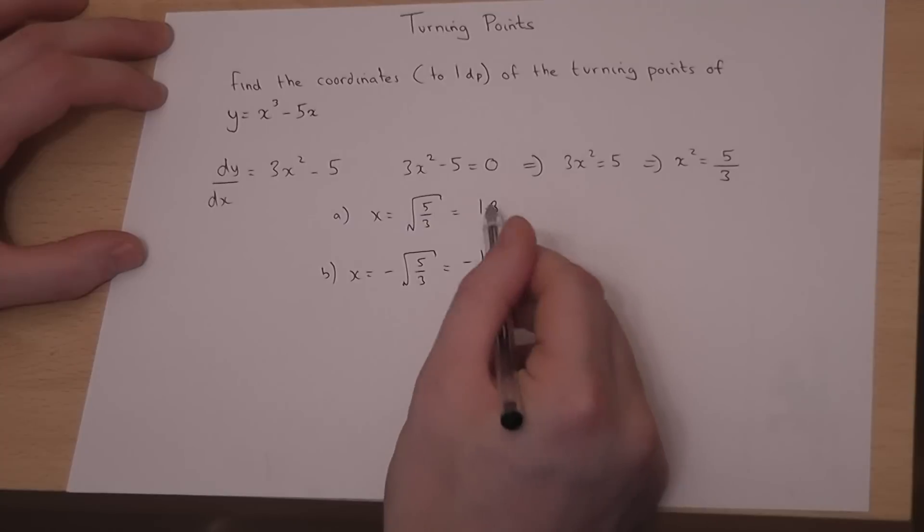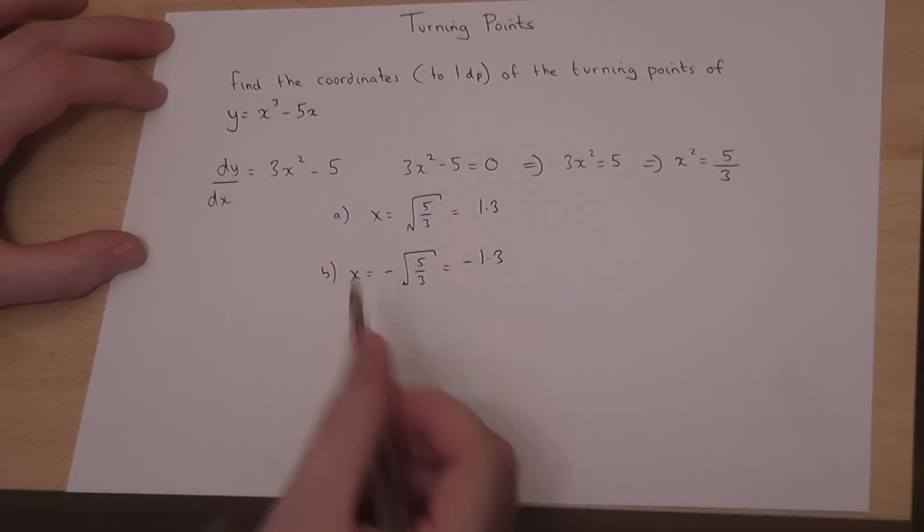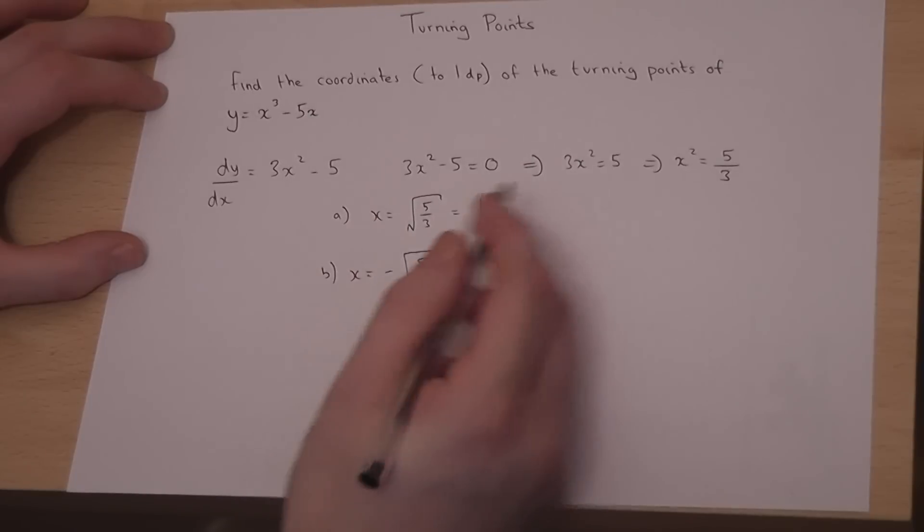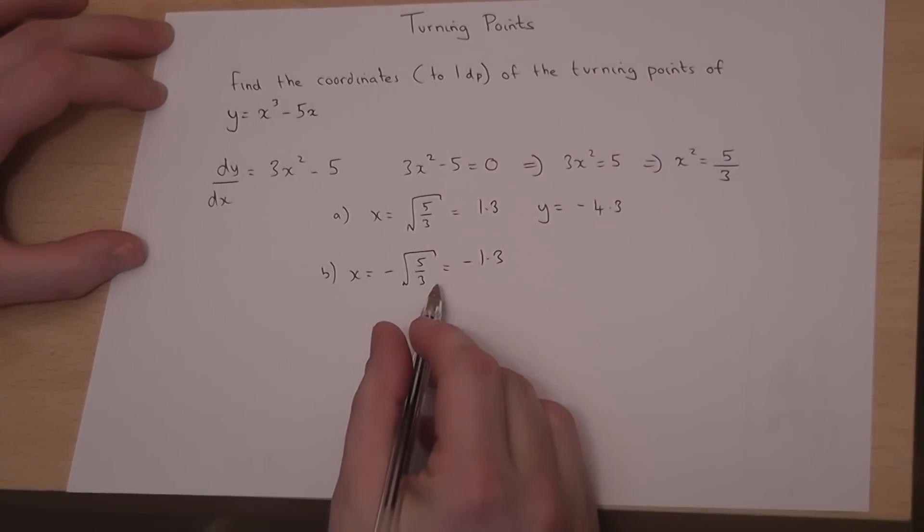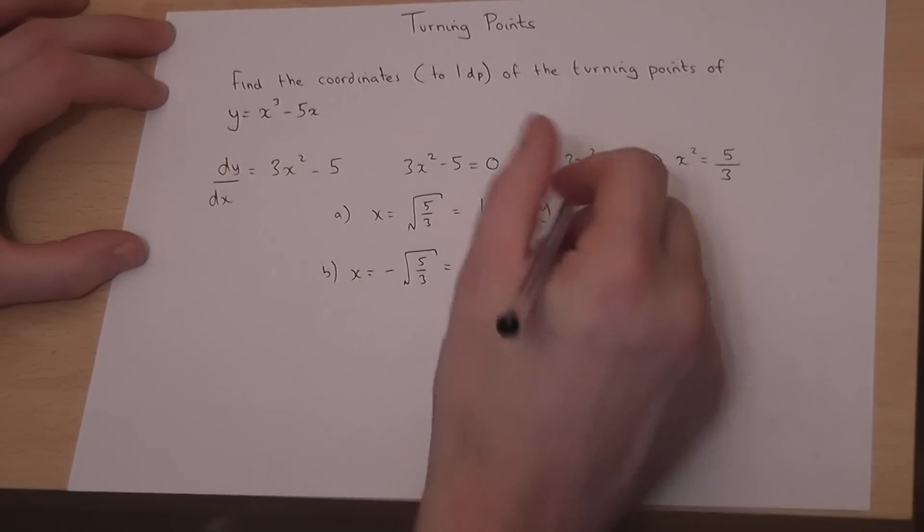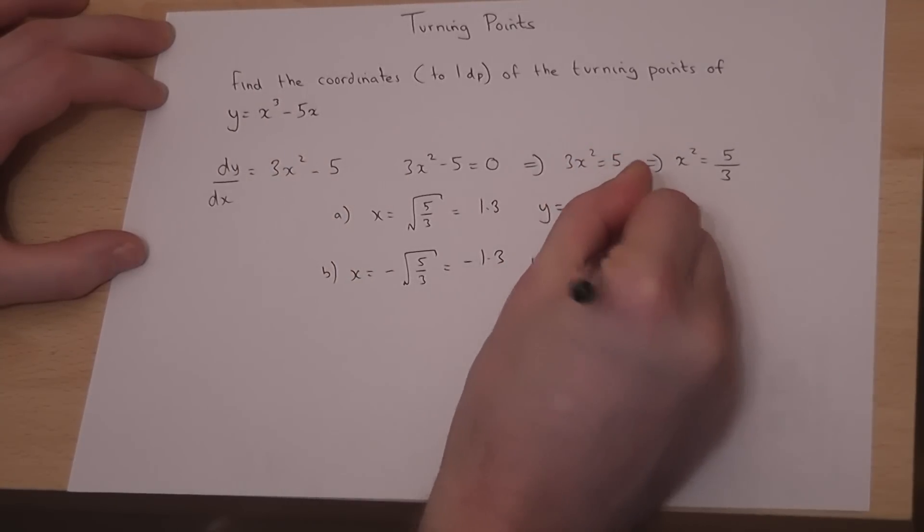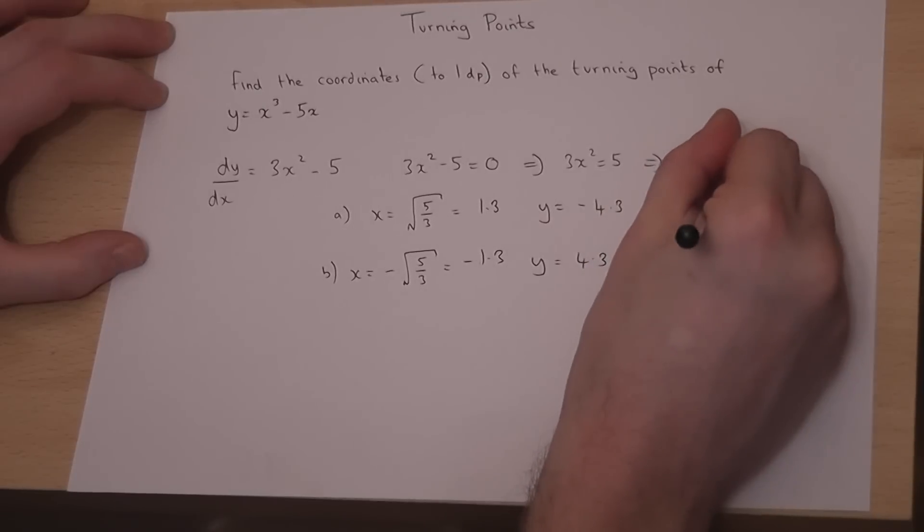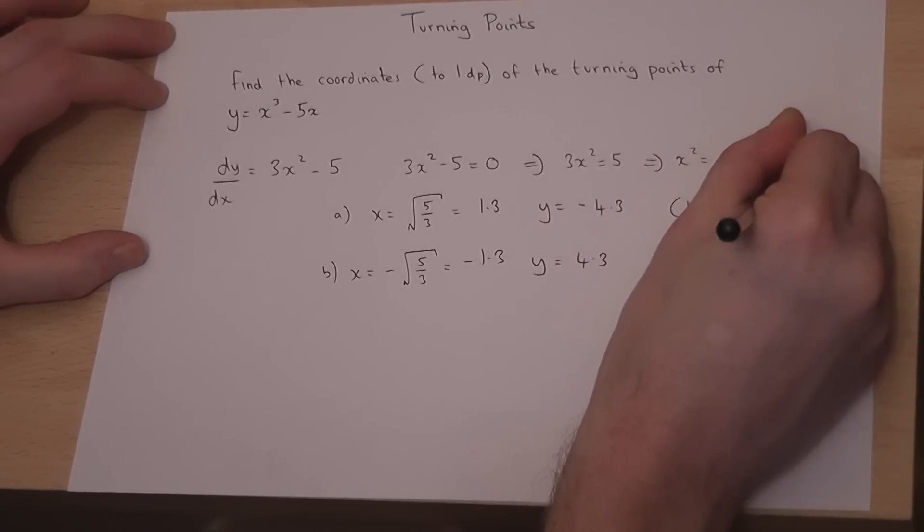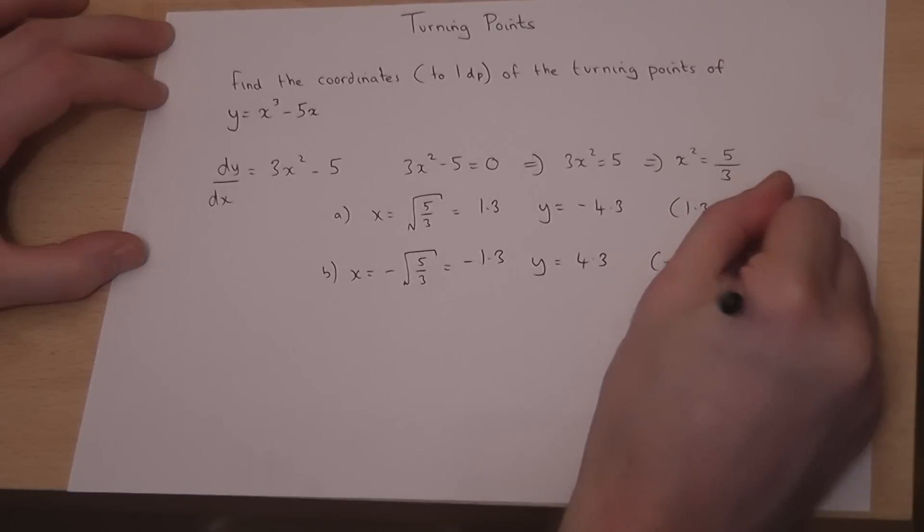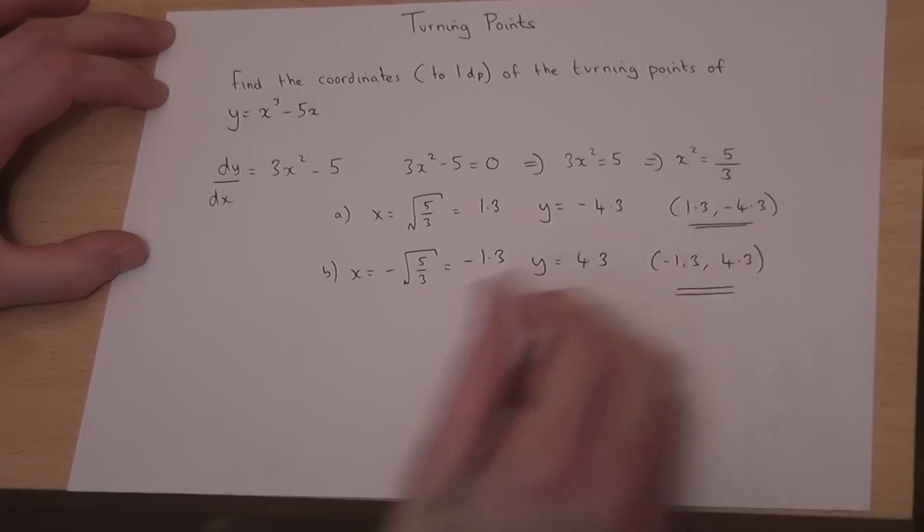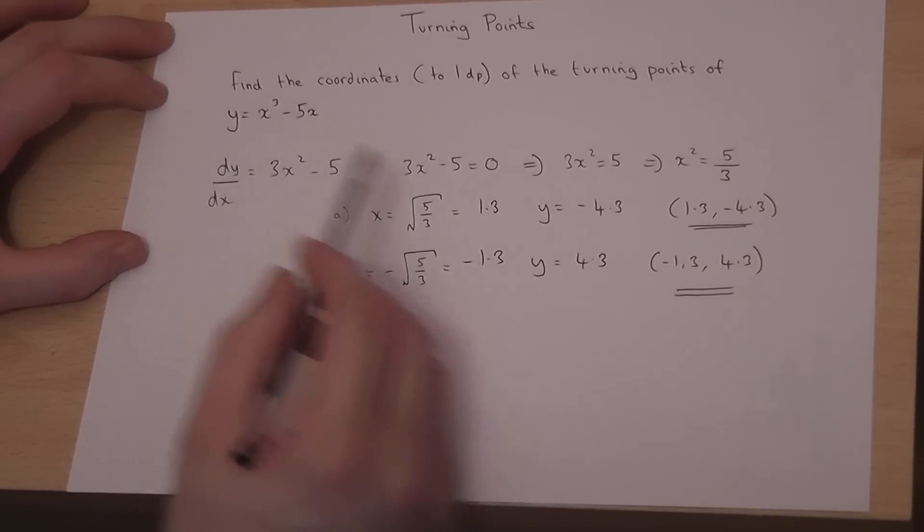So I have to put these two values separately into the y equation on a calculator. When x is 1.3, I get y to equal minus 4.3. When x is minus 1.3, from that equation there, I get y is plus 4.3. So my coordinates are 1.3 comma minus 4.3, again to 1dp, or minus 1.3 comma plus 4.3. They are my two coordinates of the turning points for this particular function.